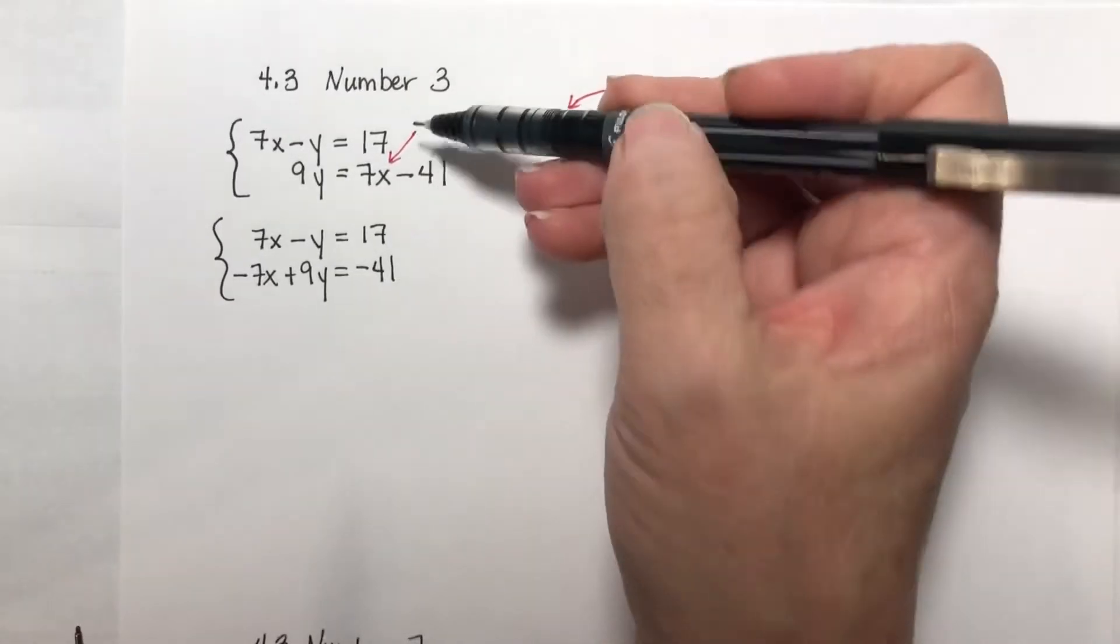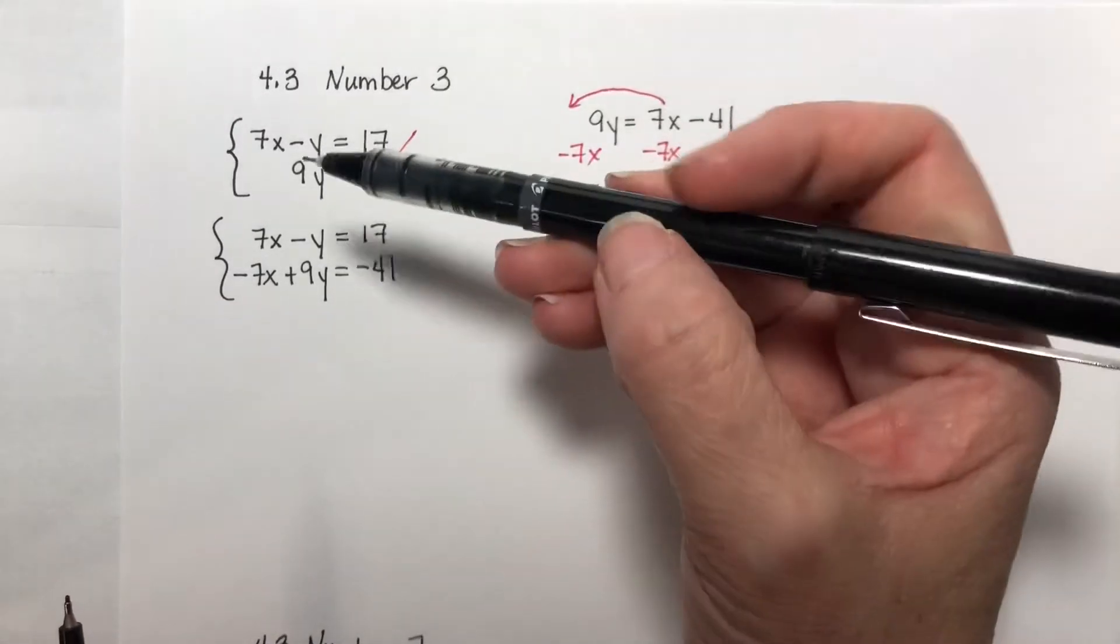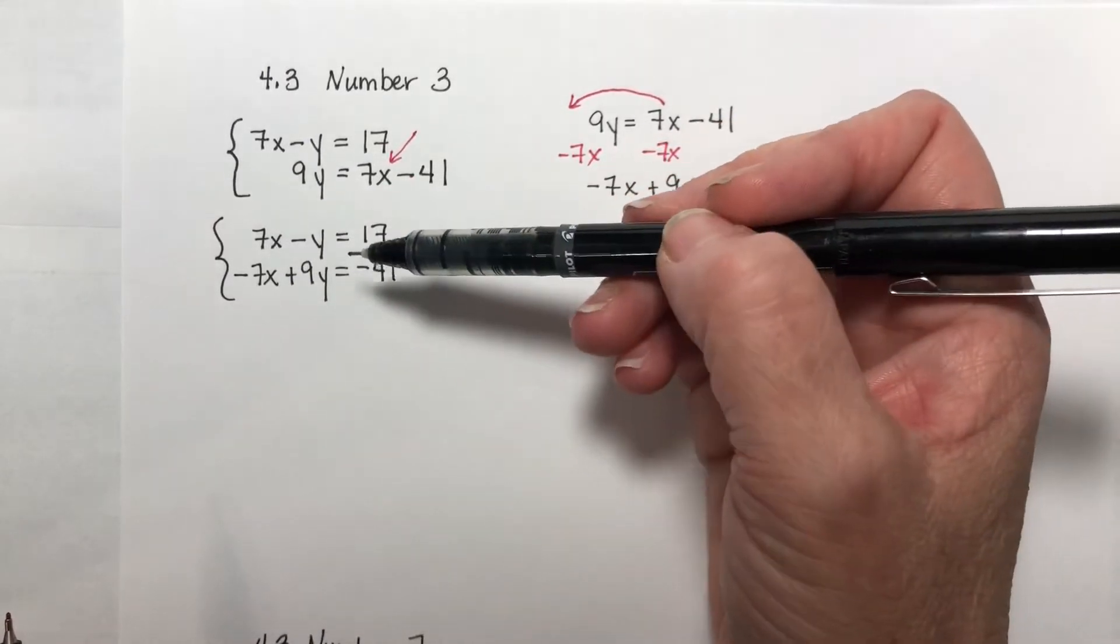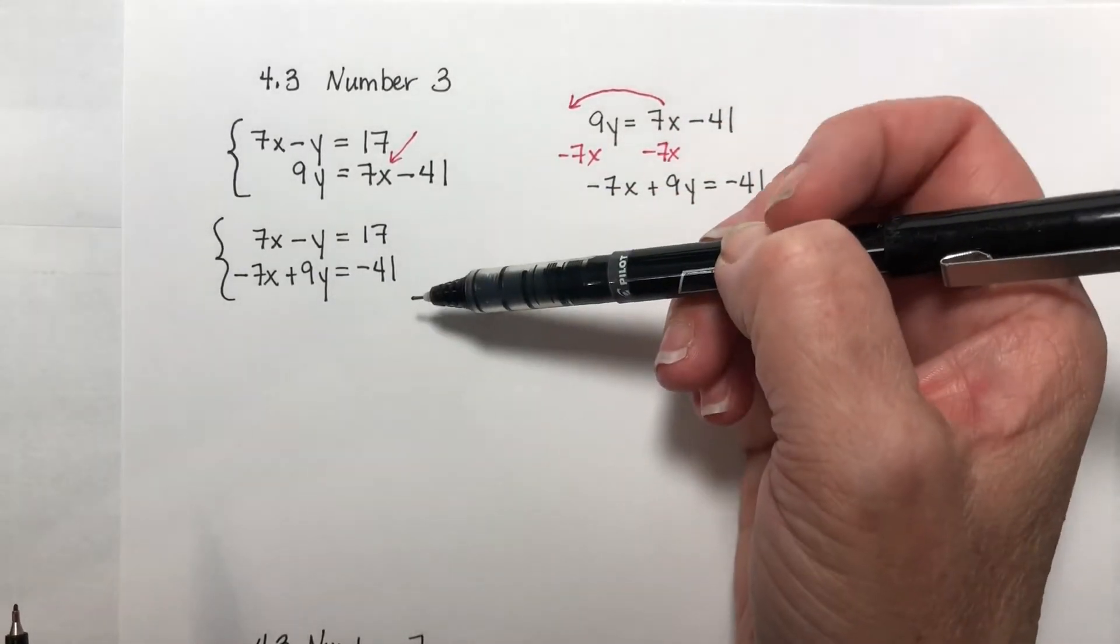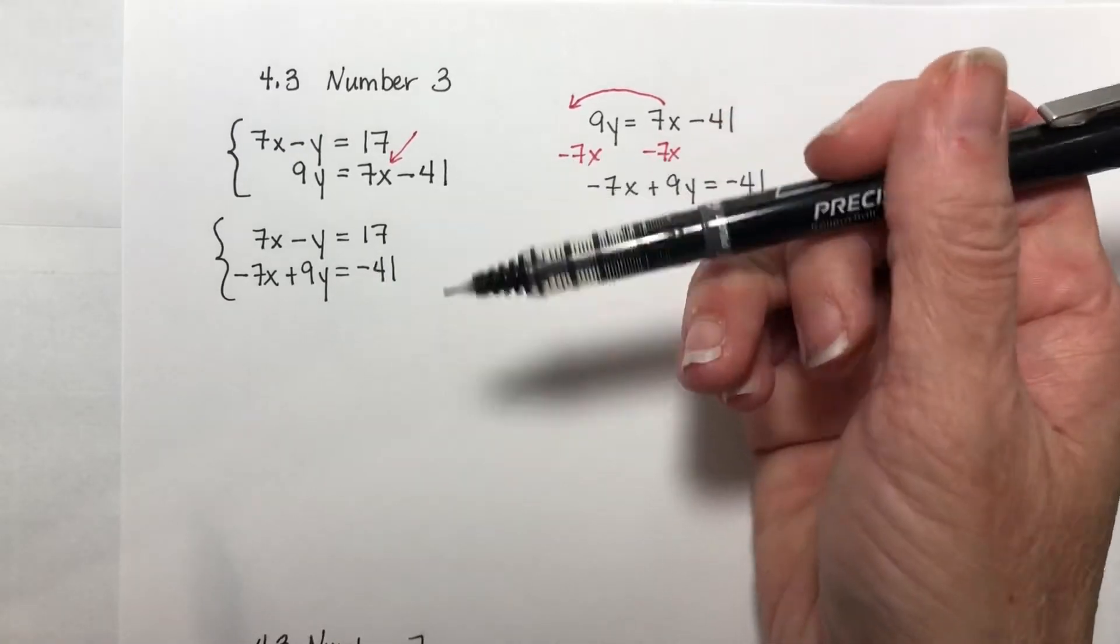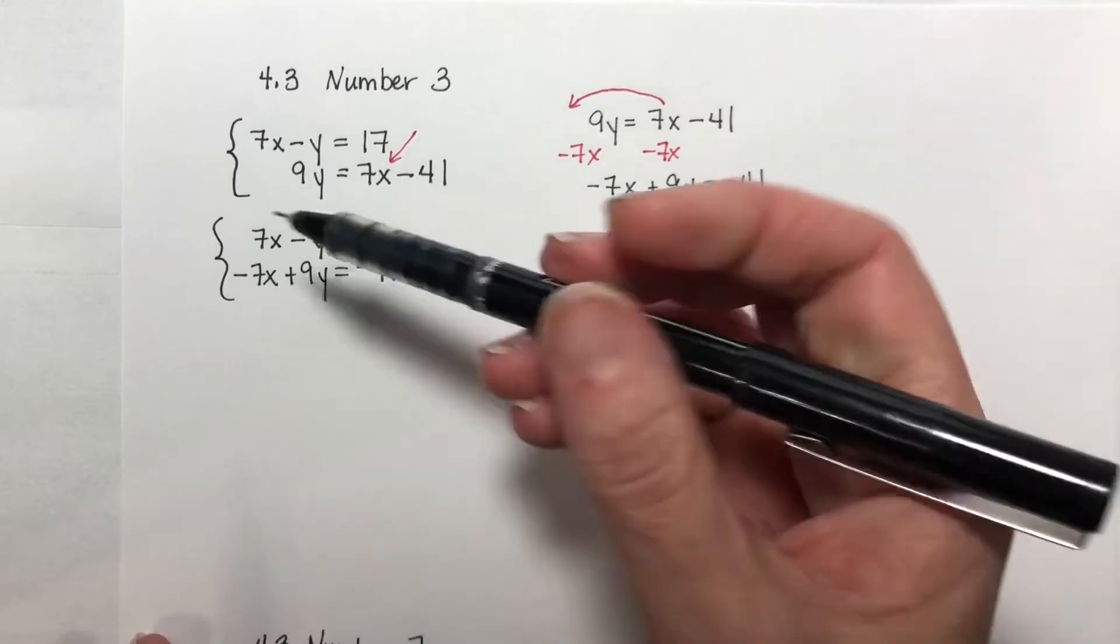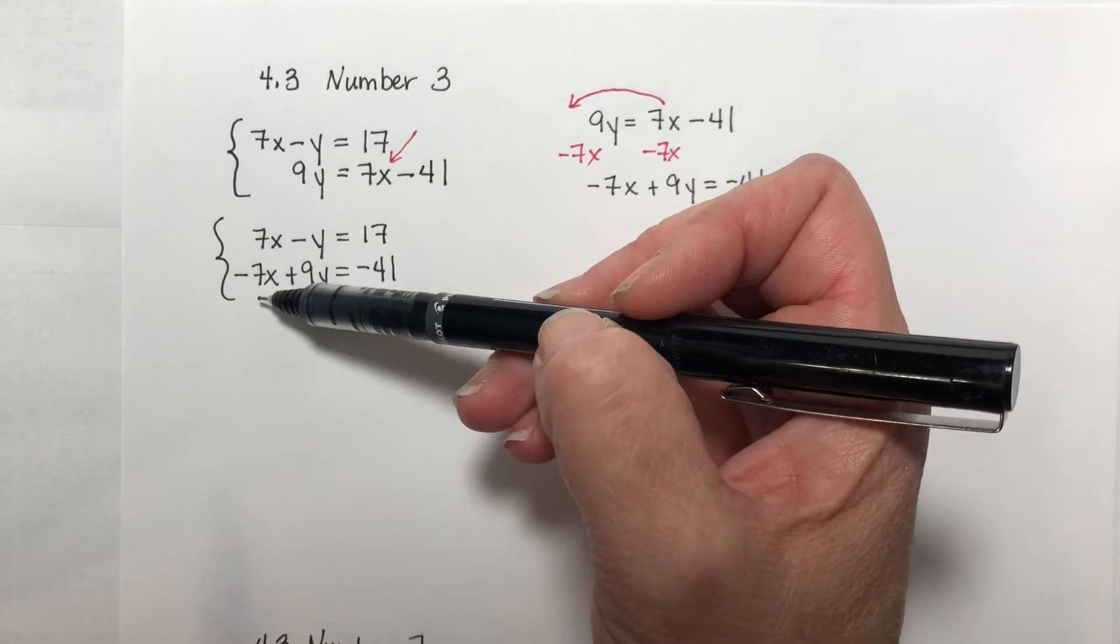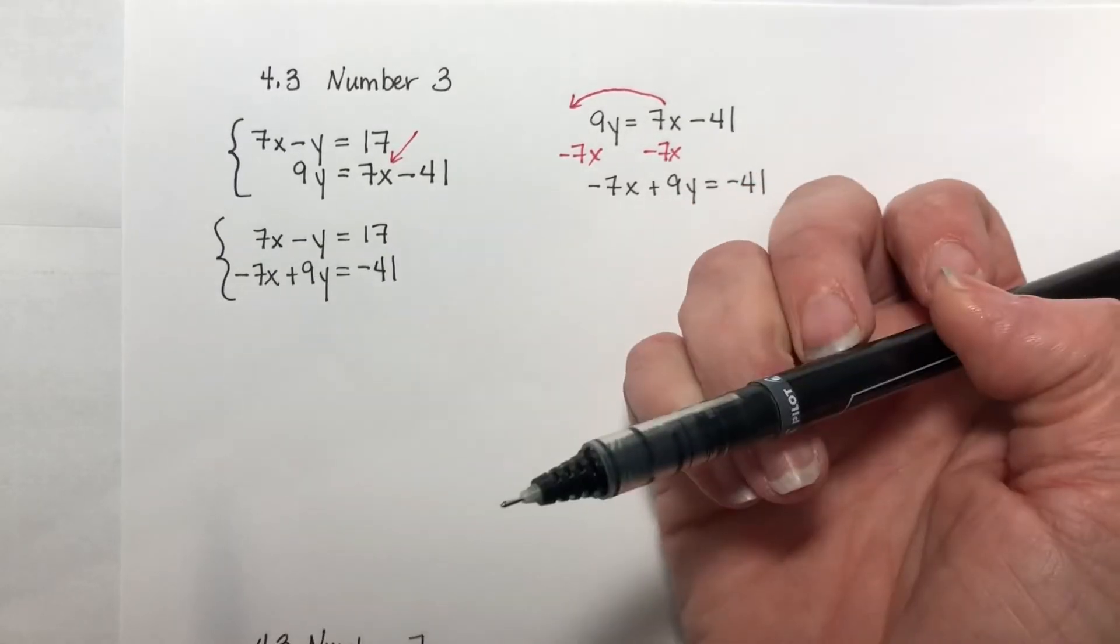So this system is the same as this system. It's just written in a different order. But now by getting our x and y's on the same side and matching them up, what we want to have happen is we want to be able to add these two equations together and have one of our two variables cancel out. Now, it never matters which one it is. Sometimes one's easier than the other. And in this case, our x's are already set up to cancel out because if I add these together and combine like terms, I'm going to have 7 minus 7, which is 0.